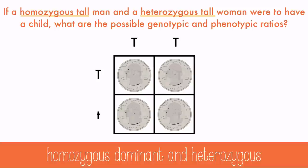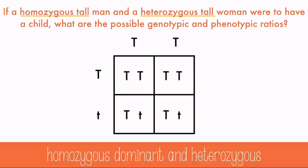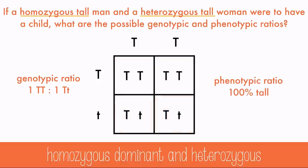The genotypic ratio is 50% homozygous dominant and 50% heterozygous. The phenotypic ratio, however, is 100% tall, because having just one tall allele will make a tall person.